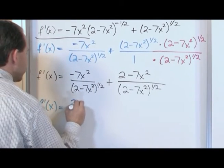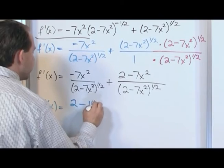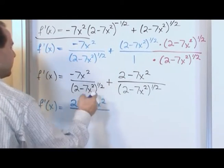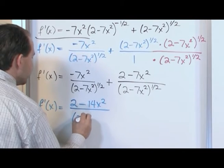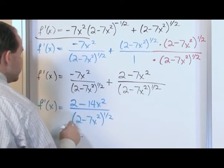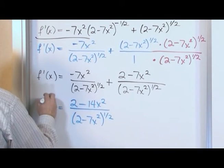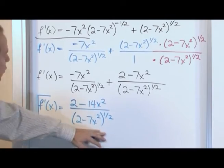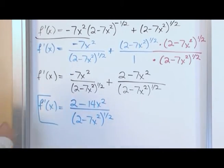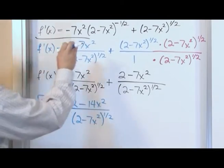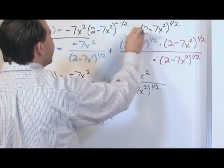So what we're going to have is, let's put the 2 out in front, minus 14x squared, because these are simply added together. On the bottom, we keep the same common denominator: (2 minus 7x squared) to the 1/2. Now you could write the bottom as a radical if you prefer, but ultimately this is the answer. So this is pretty significantly more simplified than what we have up here. But this is the derivative. You could leave it just like that.